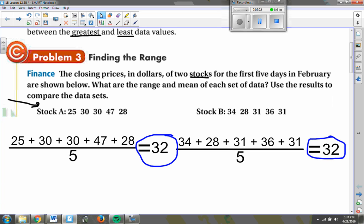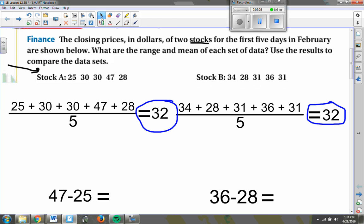But when we start to look at the range of these data sets, things get to be very, very different. Because for stock A, the highest value point, the highest dollar value is here, $47, and the lowest is here, $25. So if I want to find the range of these five data points, I just take 47, subtract the 25, and end up with a range of $22 between the highest and lowest.